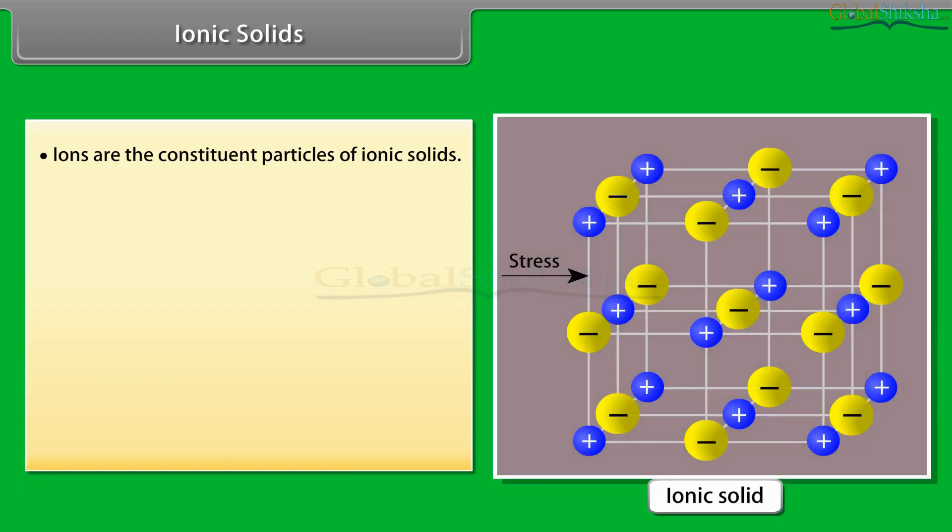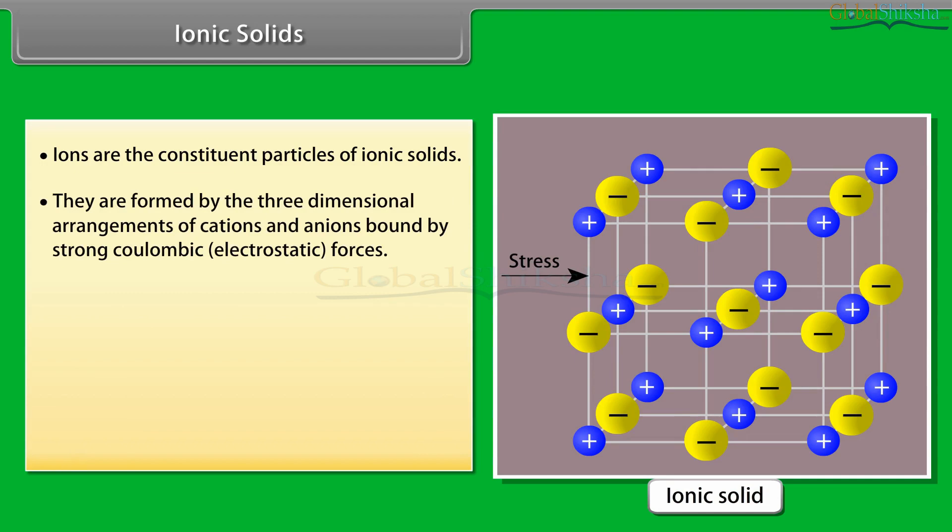Ions are the constituent particles of ionic solids. They are formed by the three-dimensional arrangements of cations and anions bound by strong Coulombic electrostatic forces. These are hard and brittle in nature.